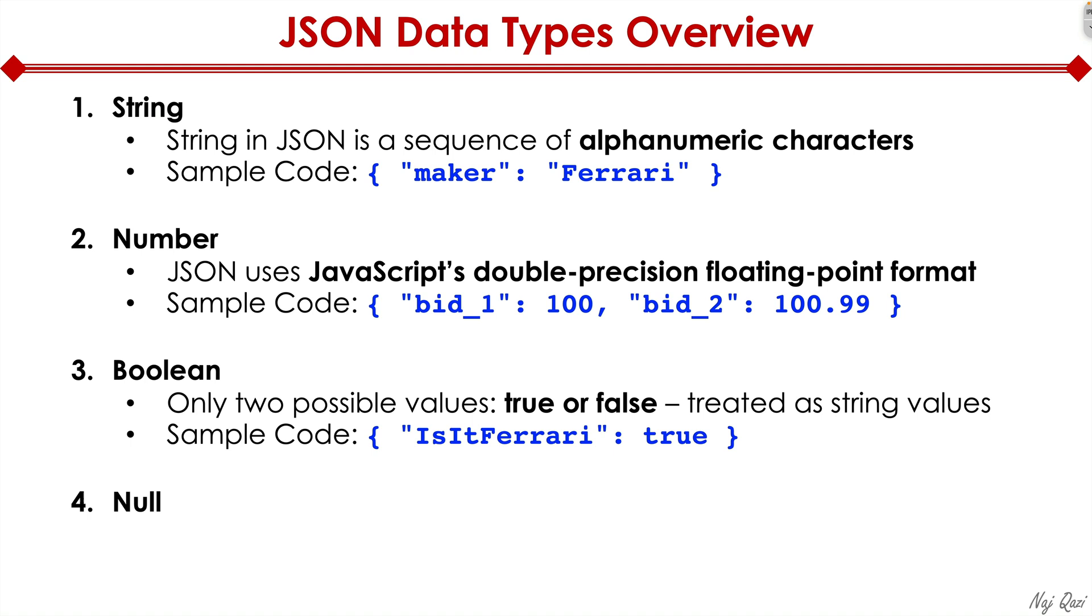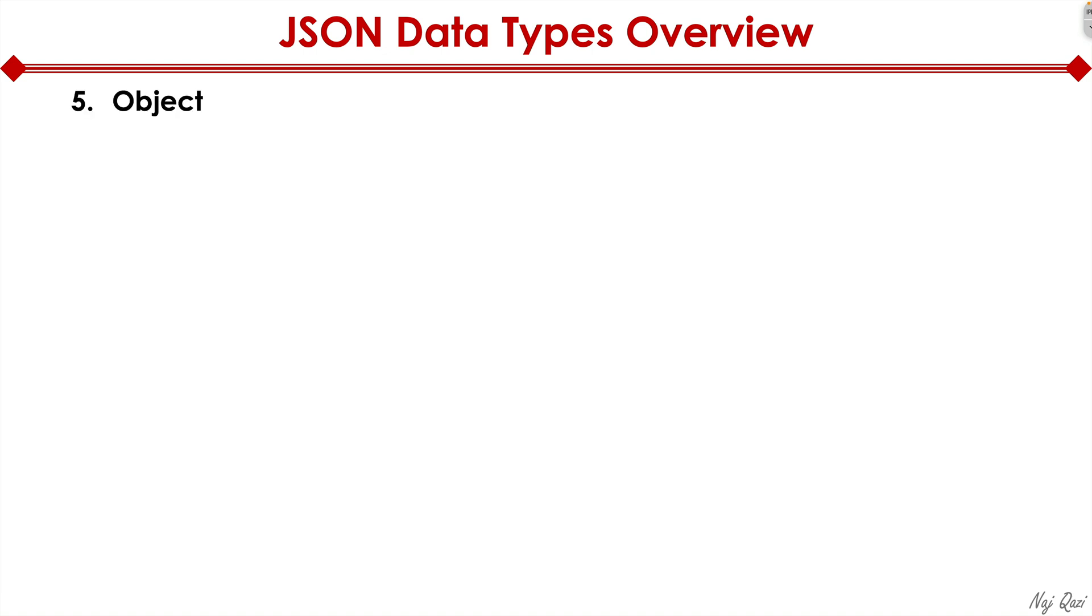The next one is null. Null is essentially an empty value. So what does the code look like? It's saying is it Roma? You're saying it's null, meaning it's not Ferrari Roma. Roma is a completely different model of Ferrari. We're looking at Enzo, so it's null.